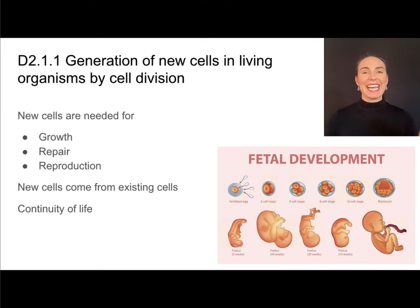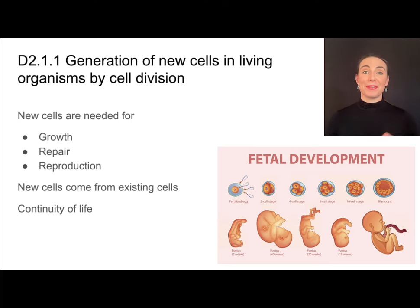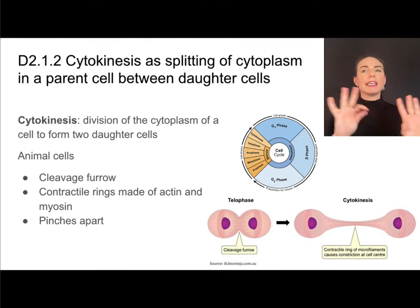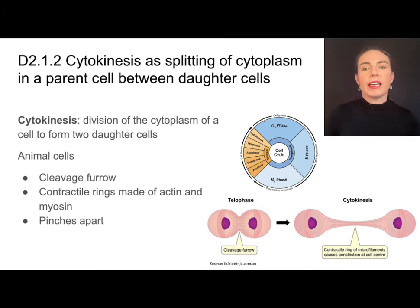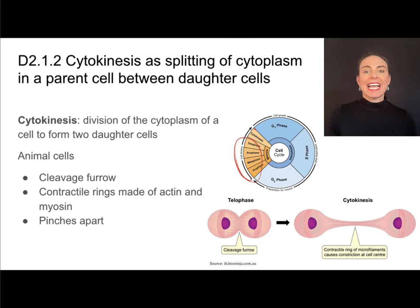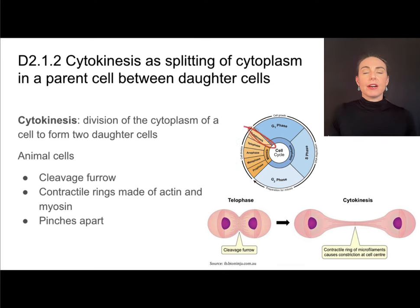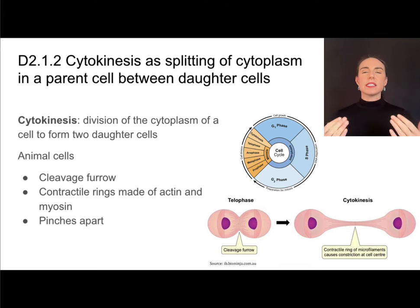Theme D is all about continuity and change, and we'll be talking about cell division processes that illustrate both of those. When I think about cell division, a cell is doing its cell things, and then it might go through nuclear division, dividing everything in the nucleus. Then I have to actually split those new cells apart, and that's going to happen in a phase called cytokinesis. Cytokinesis is not the division of the nuclear material like the chromosomes — this is the division of the cytoplasm, everything outside of the nucleus including all of the organelles.